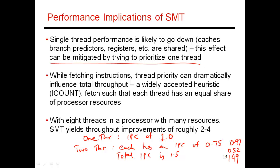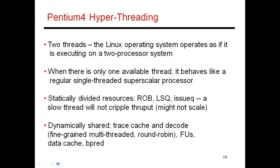One thing that people have studied very carefully with SMT processors is how you would influence fetch — how instructions get injected into the execution engine to try and maximize overall throughput. You have to recognize when some thread is being stalled, and at that time prioritize some other thread. Let me talk about one empirical study that was done to try and understand this behavior.